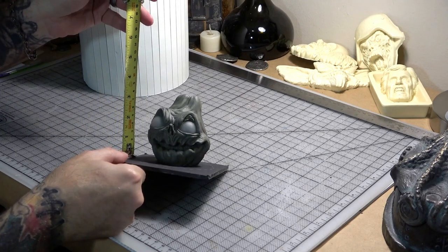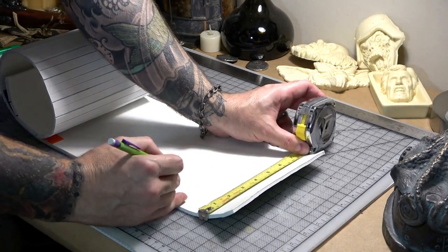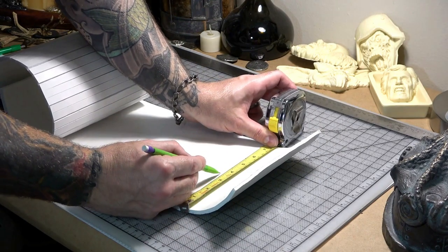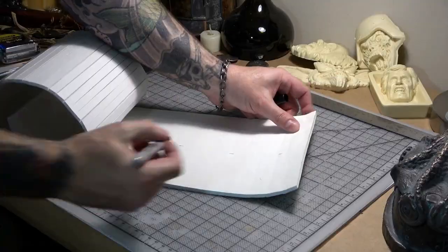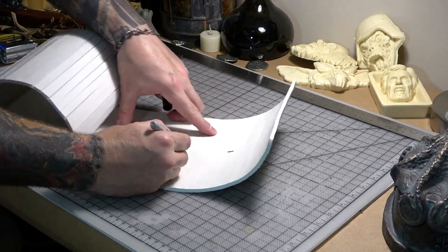Next, you want to measure and mark the walls with your pour level or fill volume that we measured earlier. These marks will let you know how much silicone you need to pour into your mold box.